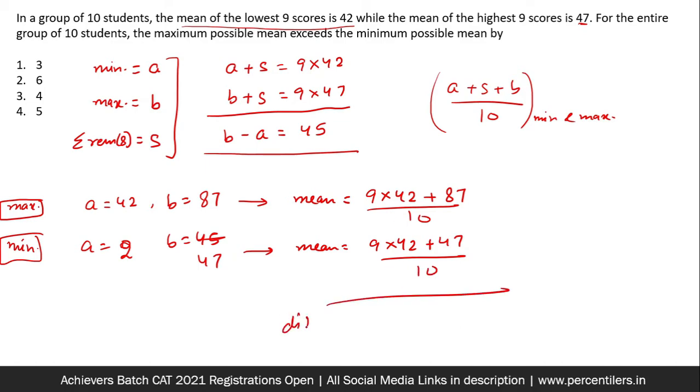Now if we subtract these two, the difference would be 40 by 10, hence 4. So third option becomes the answer. We had to find the difference between these two numbers. So basically, this minus this is what we had to do. So 9 into 42 by 10 is cancelled out, 87 minus 47 by 10, which is 40 by 10, 4 is the answer to the question.